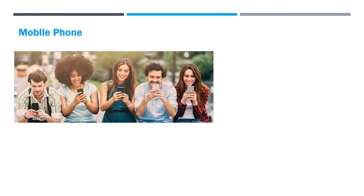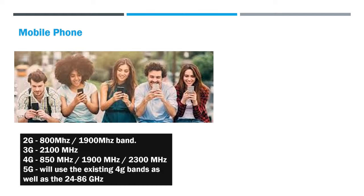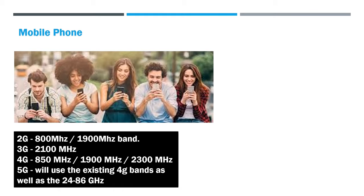Now, let's come to the frequency bands used by our beloved phone, without which most of the millennials will absolutely refuse to survive. The 2G band uses the 800 MHz to 1,900 MHz band, 3G uses the 2,100 MHz, 4G uses the 850, 1,900, and 2,300 MHz. The 5G will use the existing 4G bands as well as the 24 to 86 GHz band.